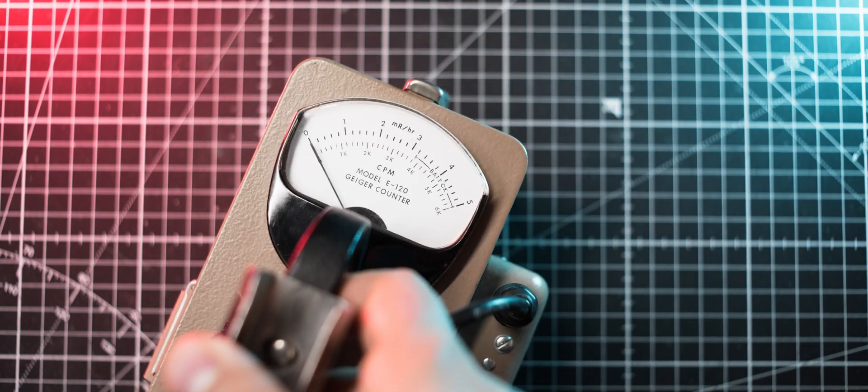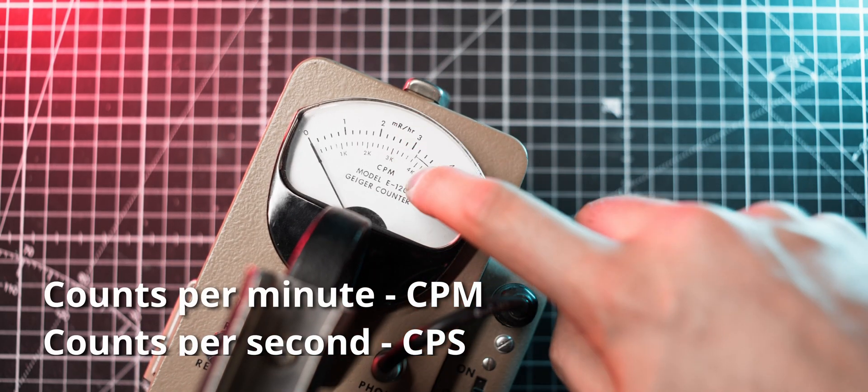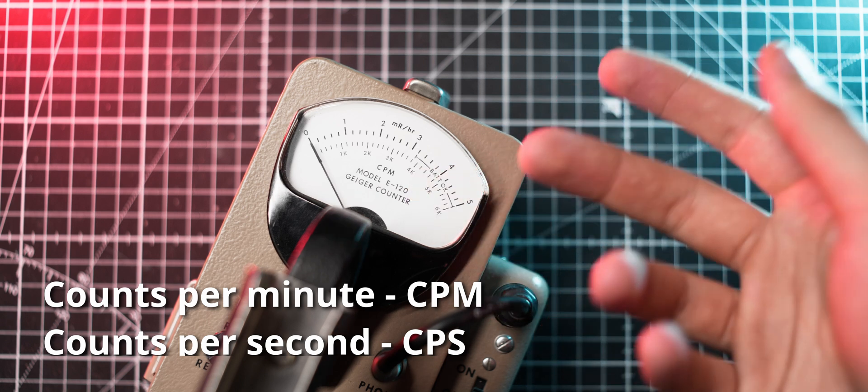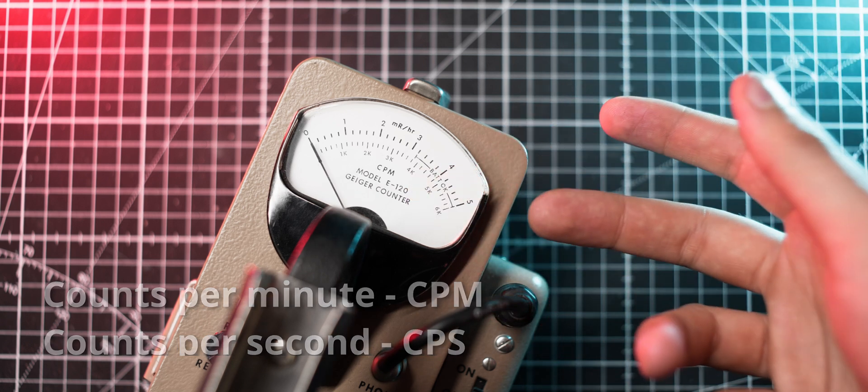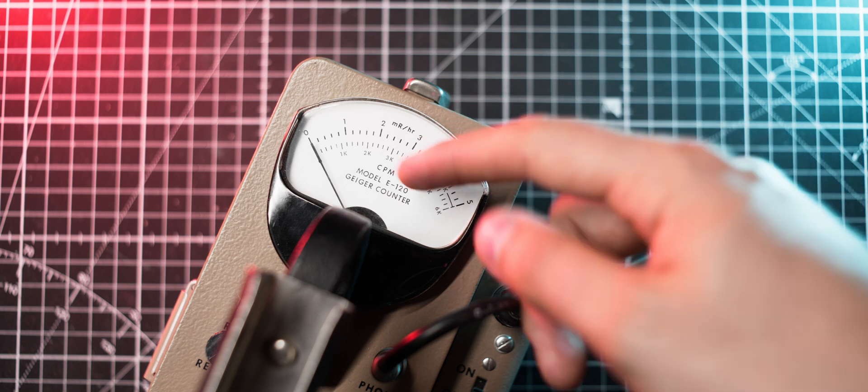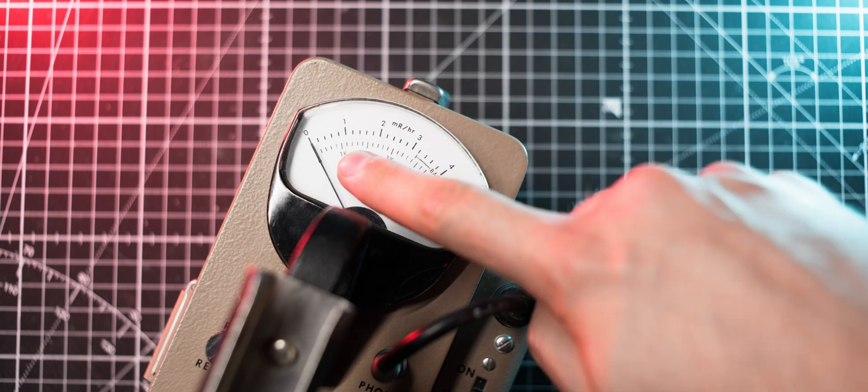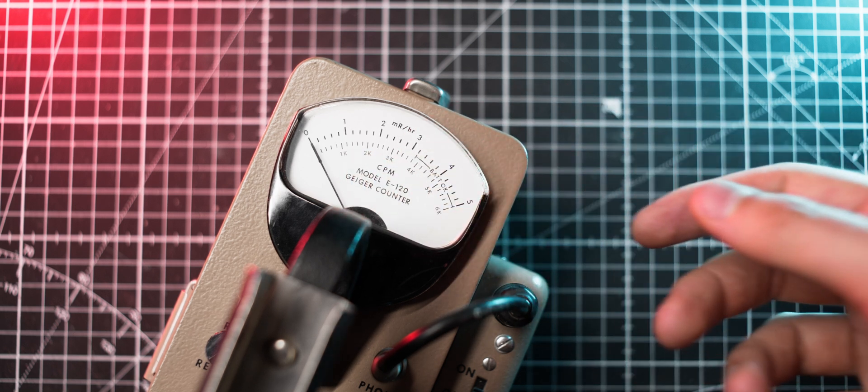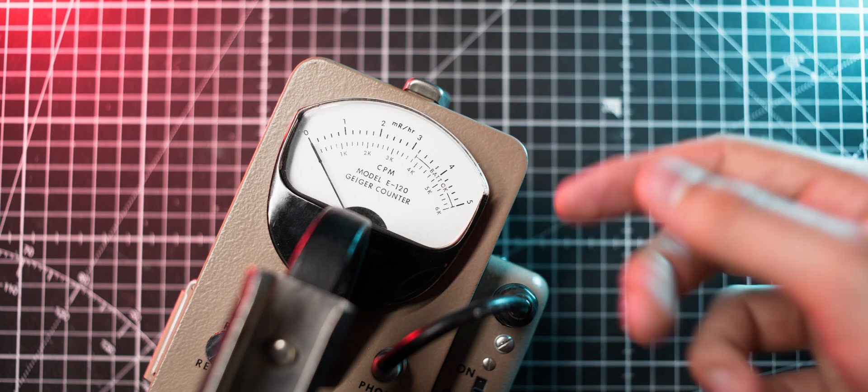Many radiation meters use counts per minute or counts per second instead of using becquerels. This is because these units show the exact amount of radiation decay events detected by the Geiger-Müller tube or scintillator used by the meter.